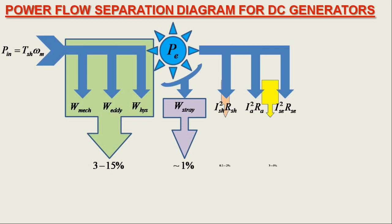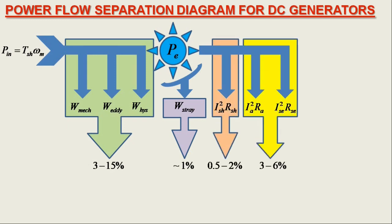Subtracting all the electrical losses occurring in the DC generator from the developed electrical power in the armature, one may finally have the net electrical output power, which is equal to the product of terminal voltage Vt and the total current delivered to the load Il.